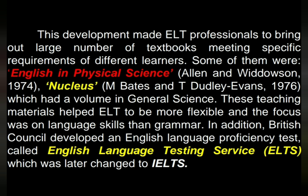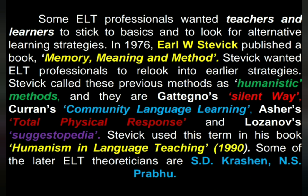Some notable textbooks were English in Physical Science by Allen and Widdowson, 1974, and Nucleus by M. Bairds and T. Dudley-Evans, 1976, which had a focus on general science. Since these teaching materials helped ELT to be more flexible, the focus was on language skills rather than grammar. In addition, the British Council developed an English language proficiency test called English Language Testing Service, which was later changed to IELTS.